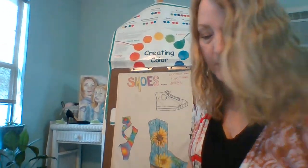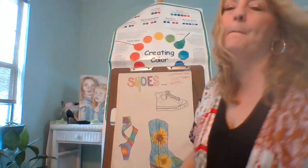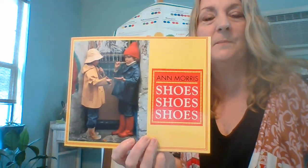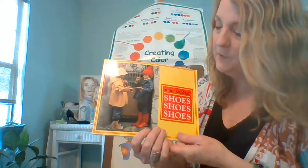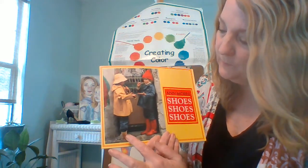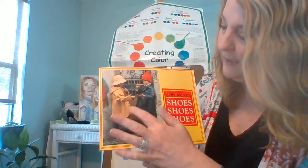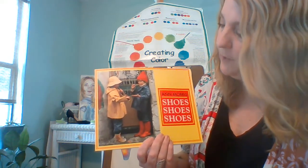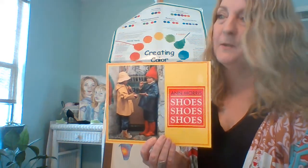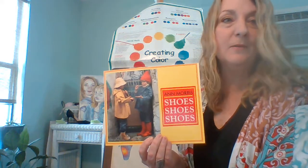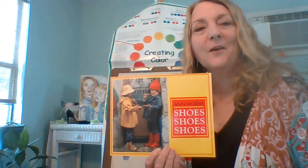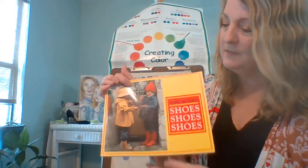We're going to start with a story called 'Shoes, Shoes, Shoes' by Ann Morris. Look at the cover — you'll notice they have on their galoshes, shorter rain boots, their hats, and some sort of raincoat. Obviously it's been raining, maybe splashing in the puddles. Today I had my red rain boots on as well. The sun is starting to come out now, so let's start this story.